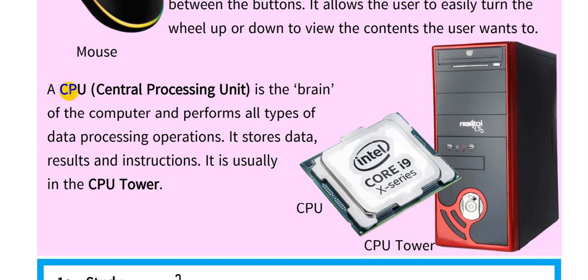A CPU, central processing unit, is the brain of the computer and performs all types of data processing operations. It stores data, results, and instructions. It is usually in the CPU tower.